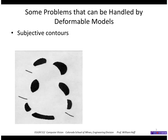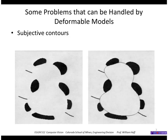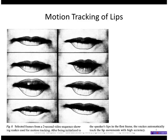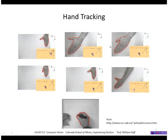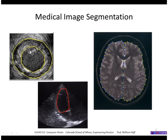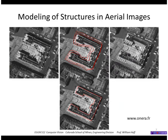Some examples of problems that can be handled by them are subjective contours — you can find a contour that fits the apparent shapes. Tracking of human body motions such as lips or hands is particularly good for video, because the position of the hand does not change much from one image to the next, so the initial guess is pretty close to where it will be in the next image. Medical image segmentation is another very useful field, as well as fitting and modeling structures in aerial images such as buildings and roads. This shape shows an initial guess drawn by the user and the final fitting of that deformable contour as it deforms to fit the image data.